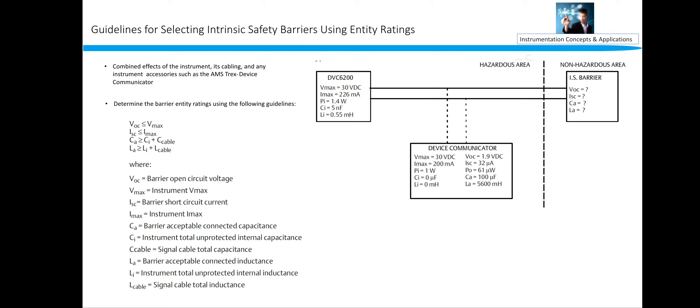Vmax is the barrier short circuit current. That is, if the hazardous area current is going to be more than ISC, then the energy will not be going through this barrier and hazardous area will not be hazardous. CA is barrier acceptable connected capacitance, Ci is instrument total unprotected internal capacitance, C cable is signal cable total capacitance.